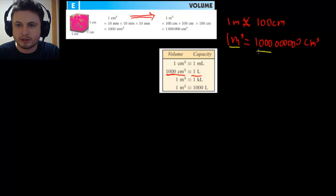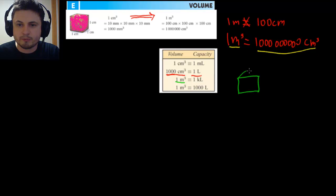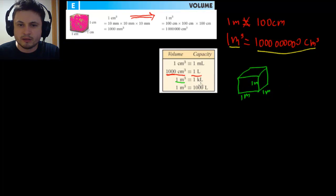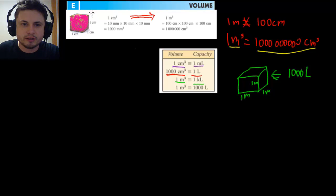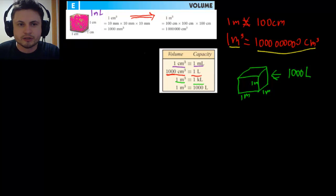So, a box that is one meter by one meter by one meter — like a large delivery box — actually contains one thousand liters, which is one kiloliter. That's a pretty large volume. On the other end of the scale, one cubic centimeter is equivalent to one milliliter, which is the unit you see on syringes, for example.